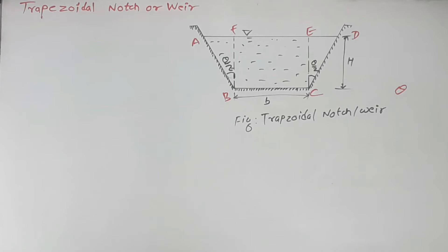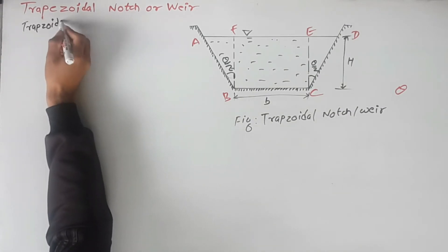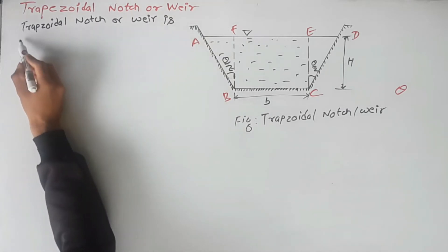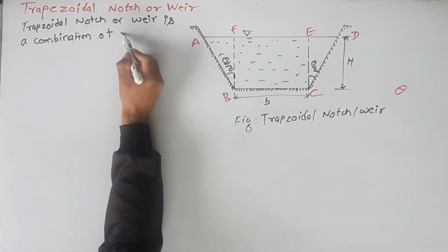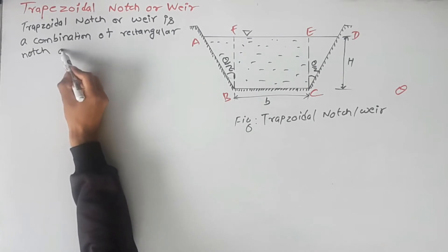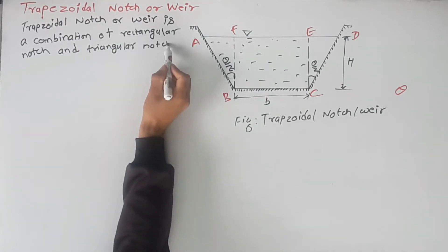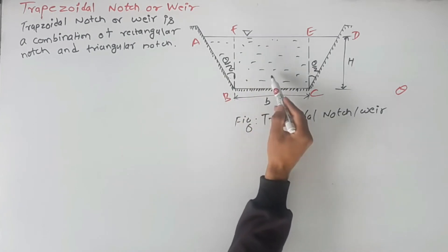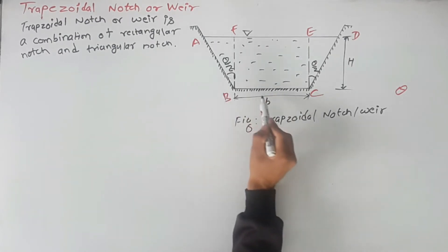So we can write here the definition of trapezoidal notch or weir. The discharge through the trapezoidal notch is equal to the sum of discharge through the single triangular notch plus one rectangular notch.